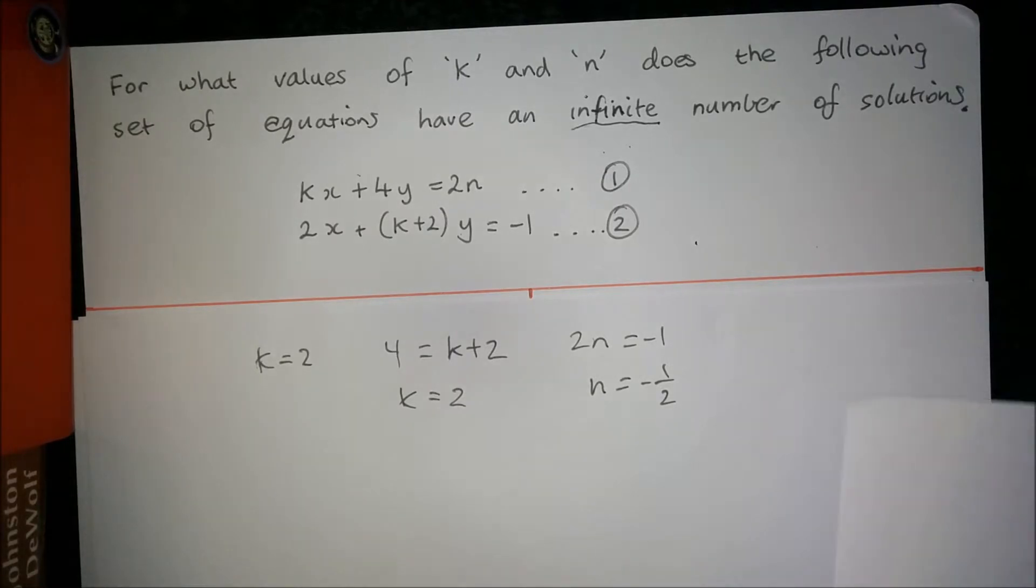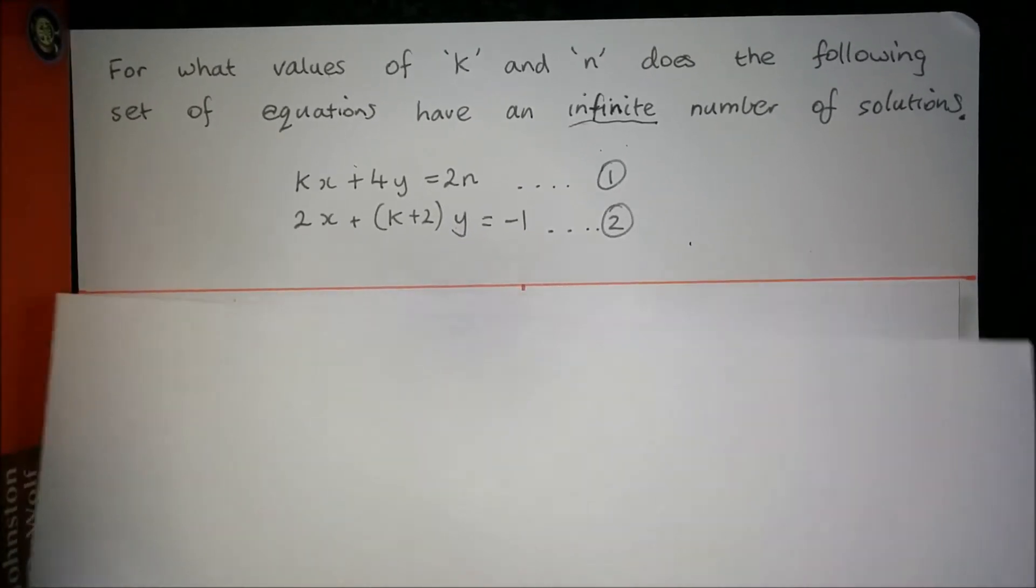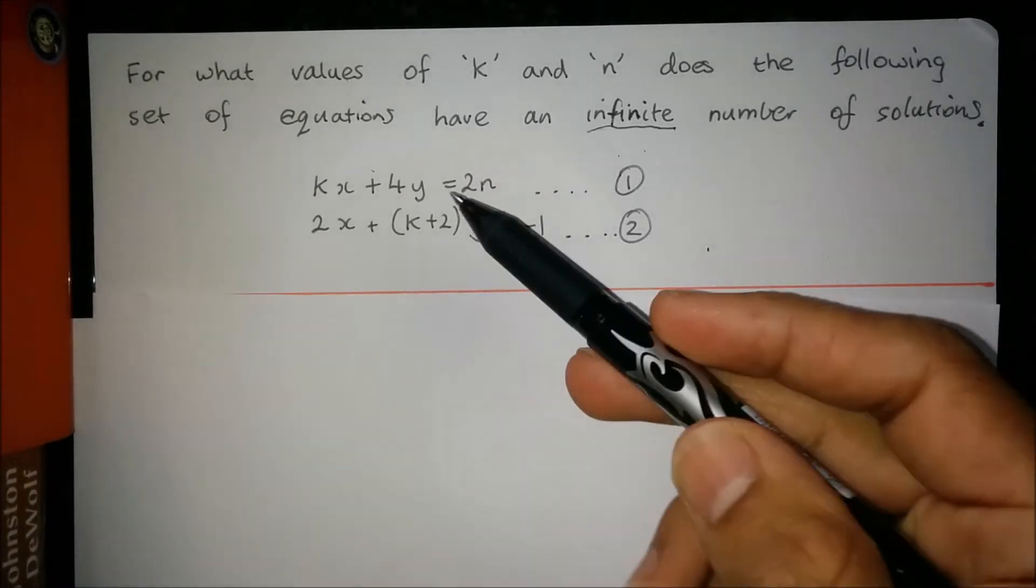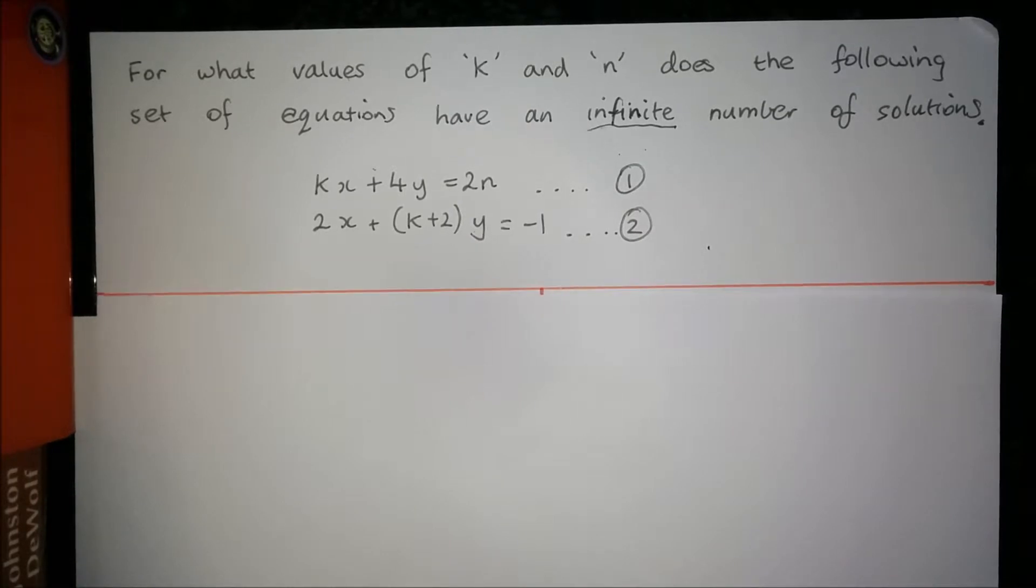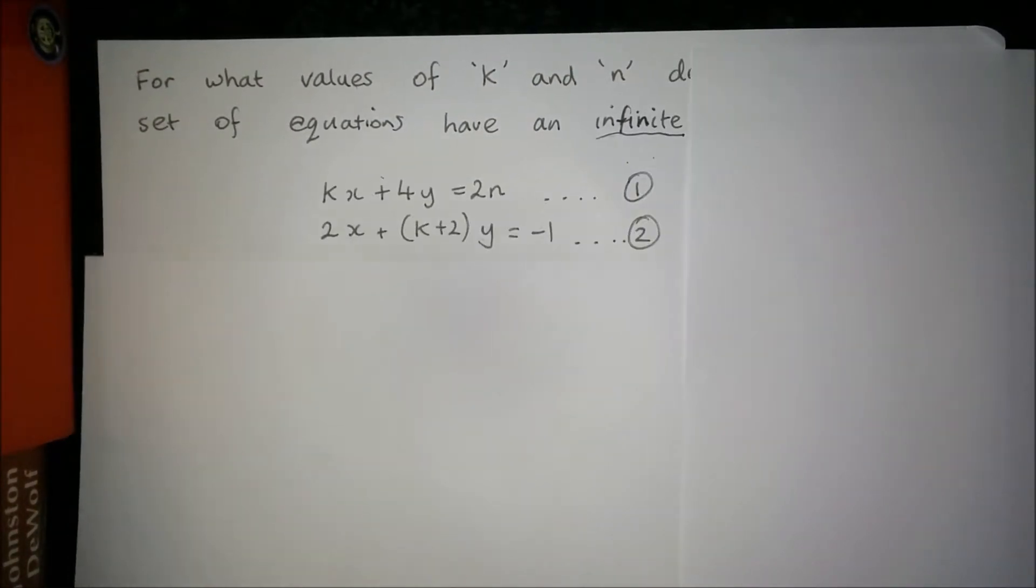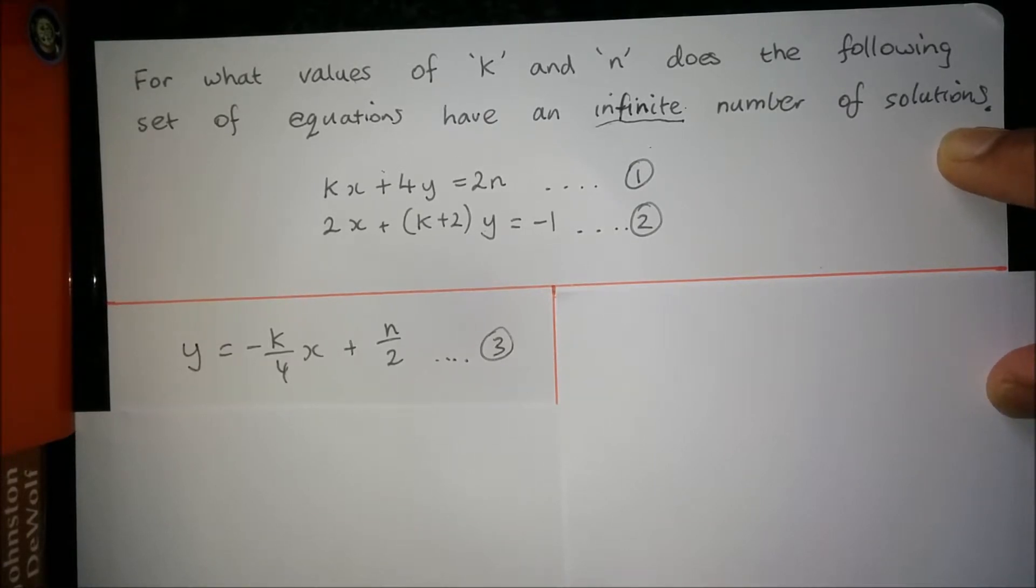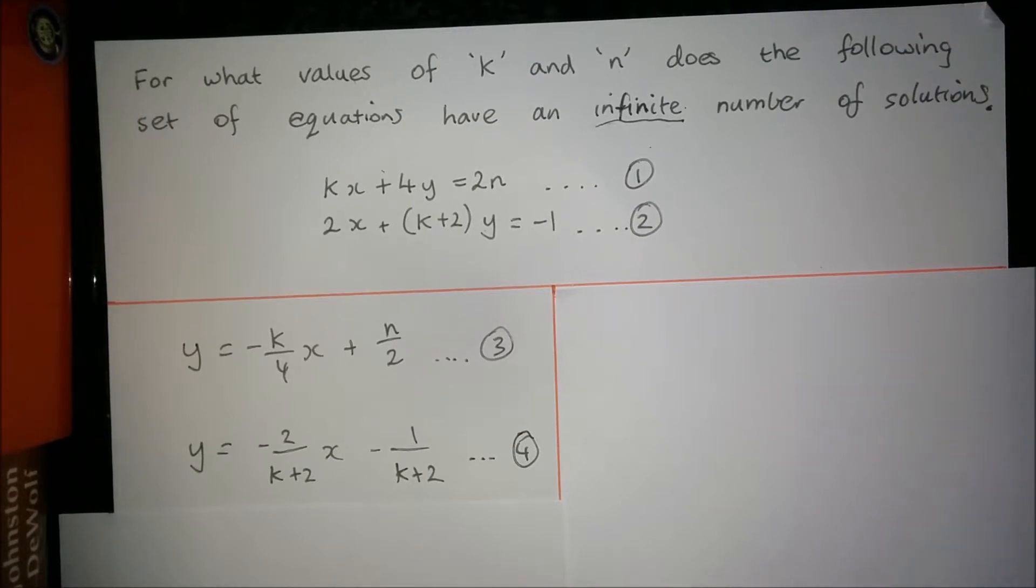To figure out all the solutions, you would have had to convert both of these equations into the form of y equals mx plus c, and then go on from there. So I'm going to show you what you should have done. Well, if you're watching this video, I would like you to try right now to convert both of these equations into the form of y equals mx plus c. So just pause your video and give that a shot. I'm going to assume you just did that, and I'm going to show you what you should have got. So, if you converted equation 1 into the form of y equals mx plus c, you should have gotten that equation there, y equals negative k over 4x plus n over 2. And equation 2, which we are going to call, once it's rearranged, we're going to call it equation 4. Well, you would have got y equals negative 2 over k plus 2x minus negative 1 over k plus 2.